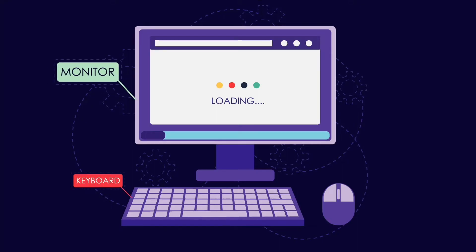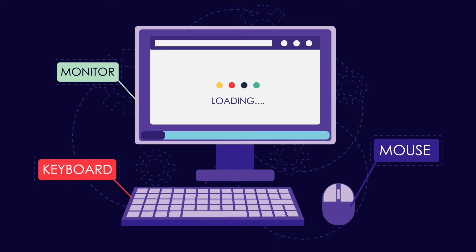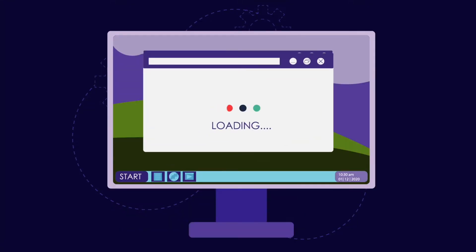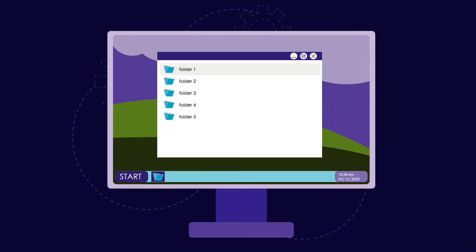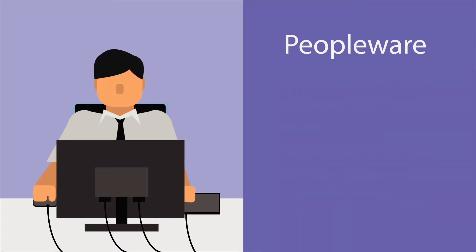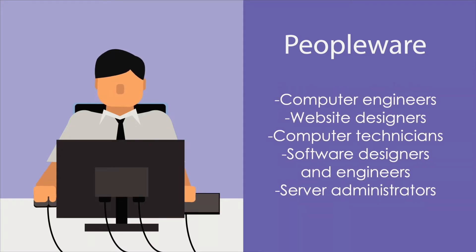Remember: the physical parts of the computer that can be touched are called hardware, and parts that cannot be seen or touched are called software. But to make the hardware work, you will need the software. Lastly, we have peopleware, which refers to the persons involved in the development of software and hardware systems. This includes computer engineers, website designers, computer technicians, software designers and engineers, and server administrators.